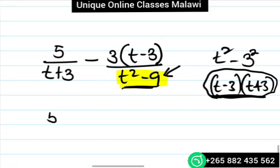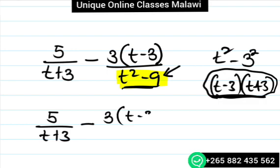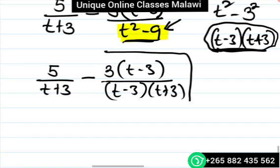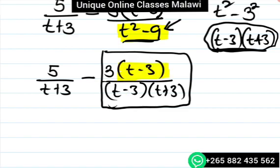Now moving forward. We're going to have 5 divided by t plus 3 minus, and then 3 divided by t minus 3, divided by t minus 3 times t plus 3.